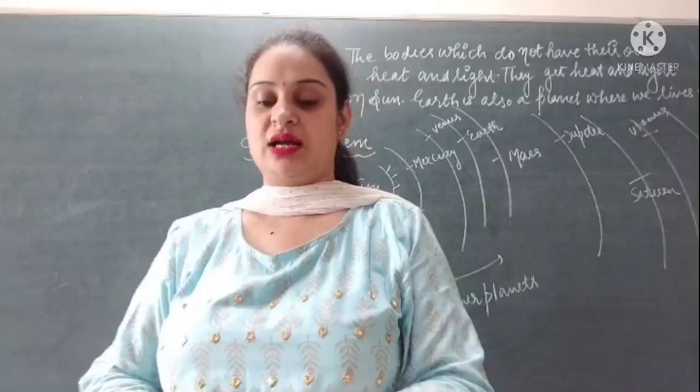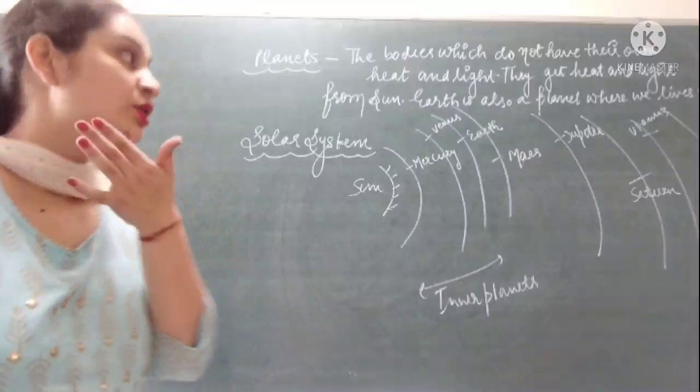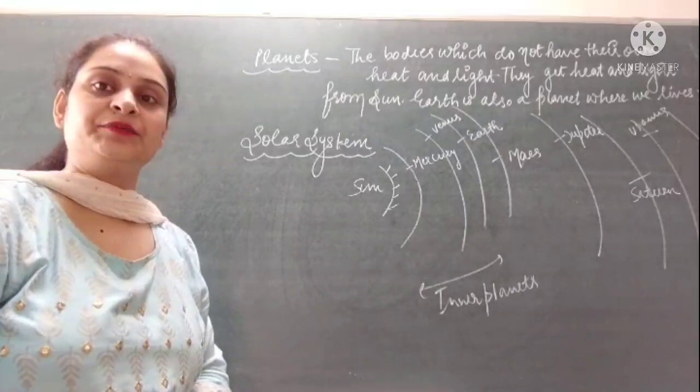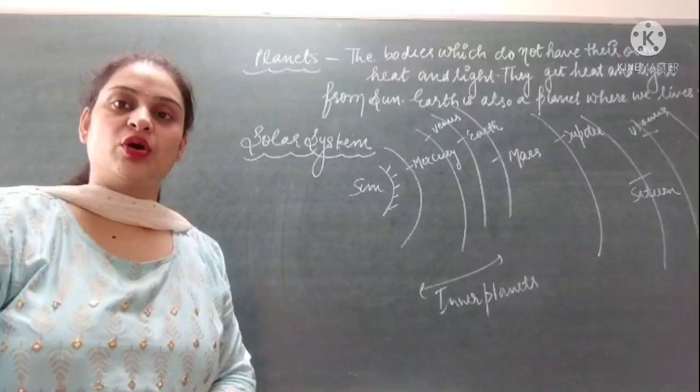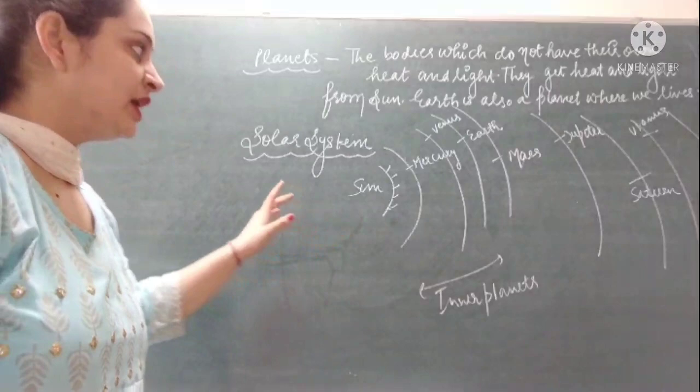So what are planets? The bodies which do not have their own heat and light are known as planets, as they get heat and light from the sun, because planets are part of the solar system. Earth is also a planet in which we all live. Here you can see the solar system in which the sun is the head, and the different planets are found in the solar system according to their distance from the sun.